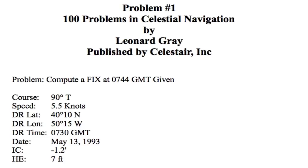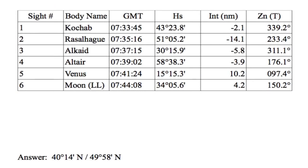Six bodies were sighted at that time. The table listed here has the GMT times for the sights and the altitudes of the sights. I've also included the intercept and the azimuth for the sight reductions, just as a check while we do the problems here. You might want to print this out and have it available while we run this video on the iPod Touch.